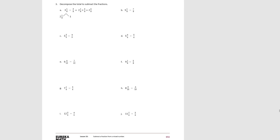For number 3, it tells us to decompose the total to subtract the fractions — so this time we're decomposing the mixed number we start with. We decompose 3 and 1 eighth into 2 and 1 eighth and 1. We rewrite 1 as 8 eighths, subtract 3 eighths leaving 5 eighths, then add back what's left. We end up with 2 and 6 eighths, or 2 and 3 fourths.